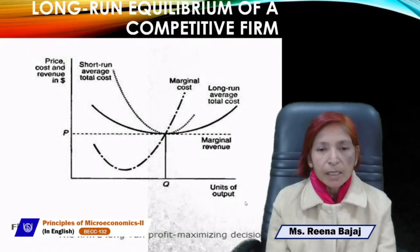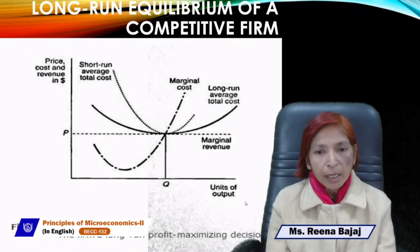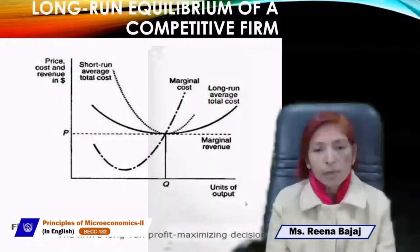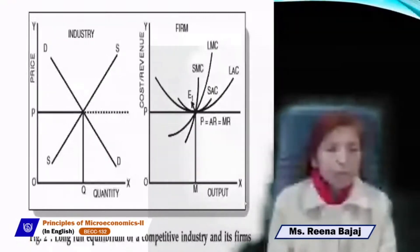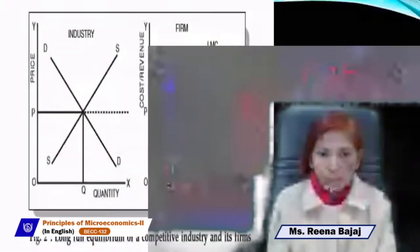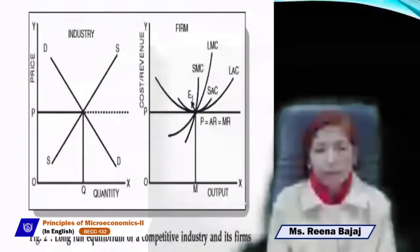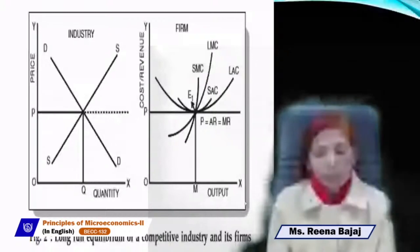The long-run equilibrium diagram shows the AR=MR horizontal price line with LAC (long-run average cost) and LMC (long-run marginal cost) curves. SAC is the short-run average cost, SMC is the short-run marginal cost. At long-run equilibrium, LMC = SMC = LAC = SAC = AR = MR, and there is no difference between AC and MC, confirming the firm earns only normal profit in the long run.